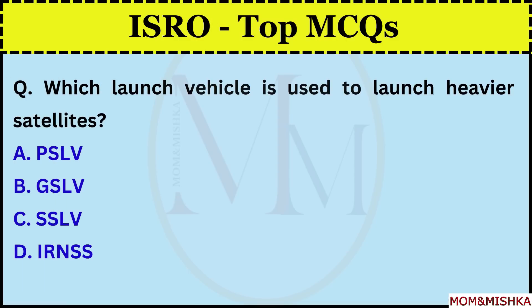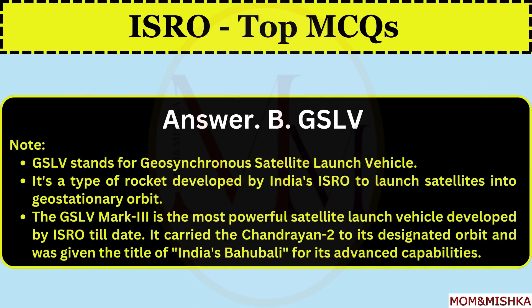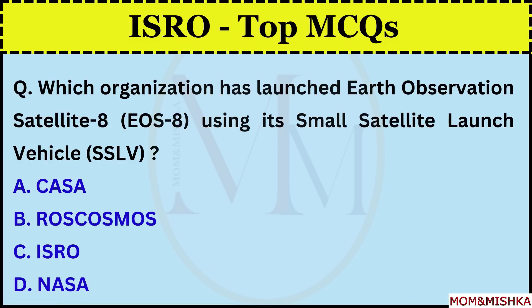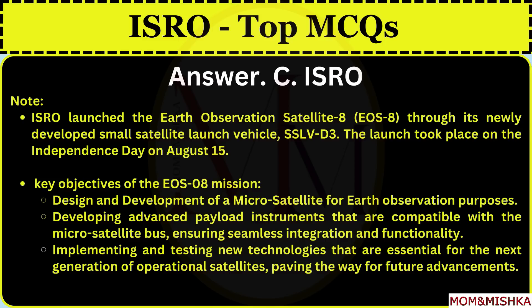Which launch vehicle is used to launch heavier satellites? GSLV, option B. GSLV stands for Geosynchronous Satellite Launch Vehicle, a type of rocket developed by ISRO to launch satellites into geostationary orbit. The GSLV Mark 3 is the most powerful satellite launch vehicle developed by ISRO to date. It carried Chandrayaan 2 to its designated orbit and was given the title of India's Bahubali. Which organization launched Earth Observation Satellite 8 using its small satellite launch vehicle? ISRO, option C. ISRO launched EOS-8 through its newly developed SSLV-D3. The launch took place on Independence Day of India, 15th August.